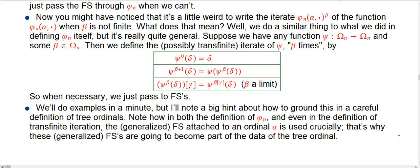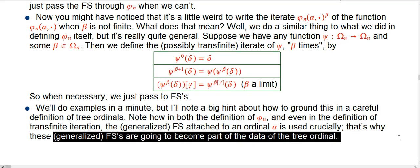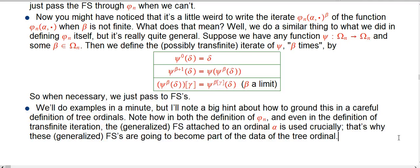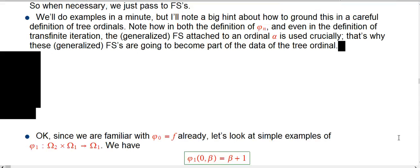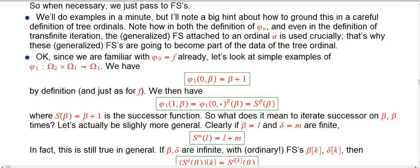I don't think I'll have time to do examples in this video - I'll do it in the next one. But just a reminder and kind of a hint: this is giving us a lot of information about what the careful definition of tree ordinals is going to have to be. In the definition of phi sub n and even in this definition of transfinite iteration, the fundamental sequence that's attached to an ordinal is totally used every single time in all of these definitions. Those generalized fundamental sequences are going to become really absolutely part of the definition of the tree ordinals. Next video we will do some examples of what probably is looking fairly abstract and complicated with phi right now, but we'll see that it's not too bad.